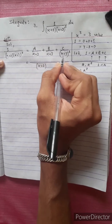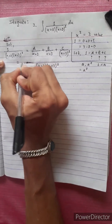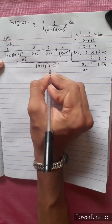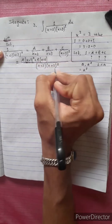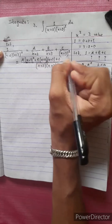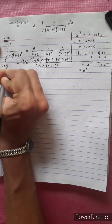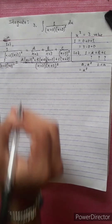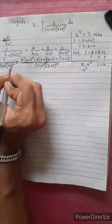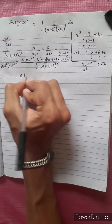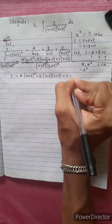We multiply both sides by x plus 2 and x plus 3 squared. So 1 equals A times x plus 3 squared, plus B times x plus 2 times x plus 3, plus C times x plus 2. This is our working equation.